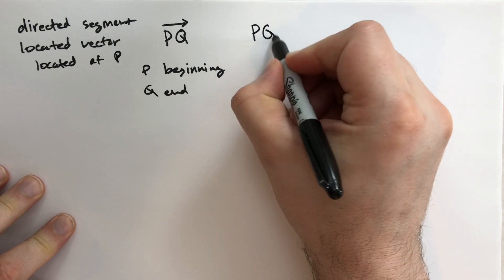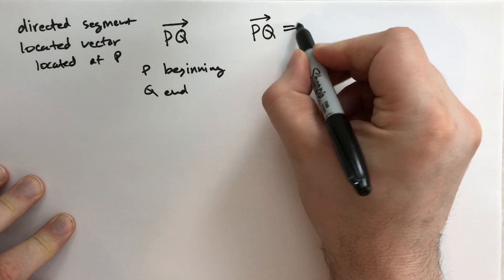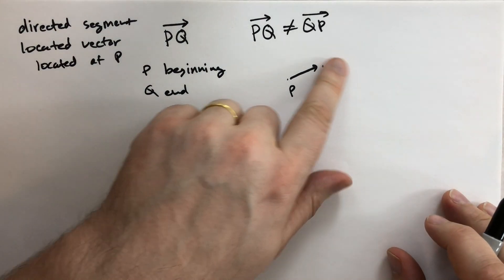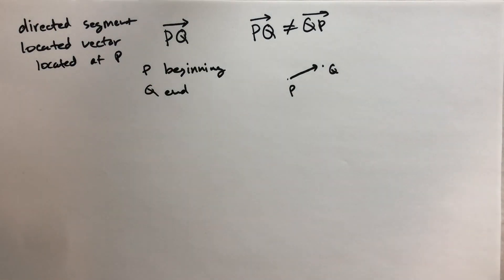We also say that PQ vector is not equal to QP vector, because the direction is important. The line segments were equal, but the vectors are not. The located vectors are not.